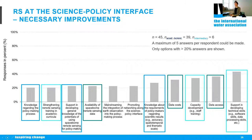The third theme was knowledge development — understanding the requirements of policymakers regarding scientific results such as accuracies, as well as scientists' own knowledge about the policymaking process. Policymakers should also be made aware of the potentials of remote sensing for policymaking.